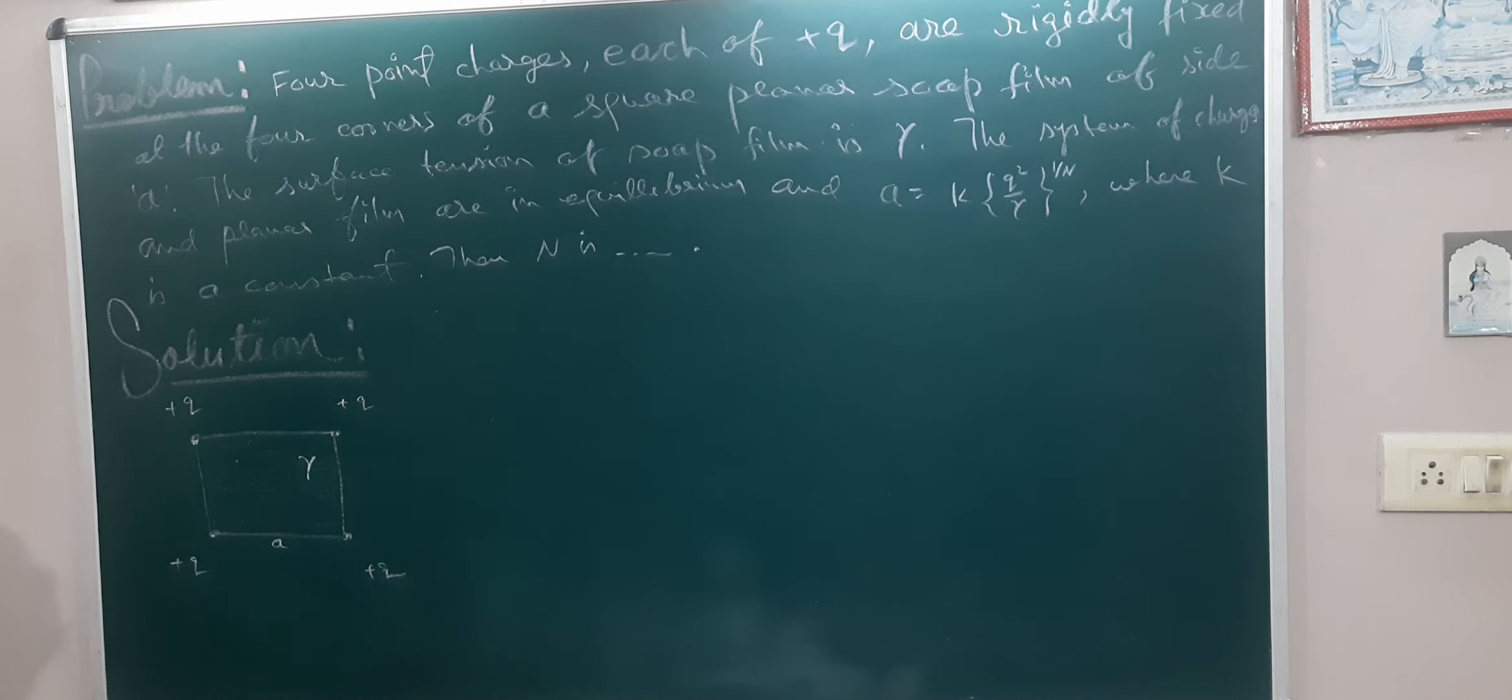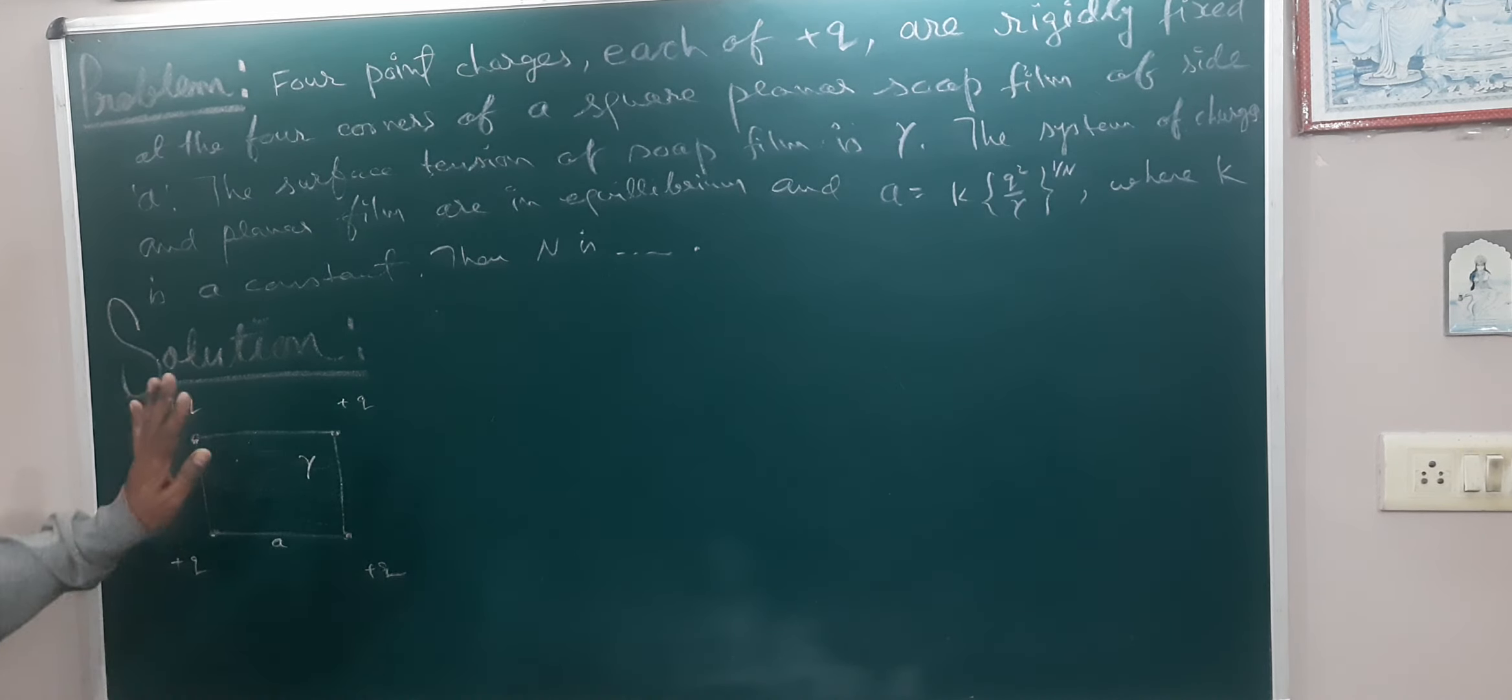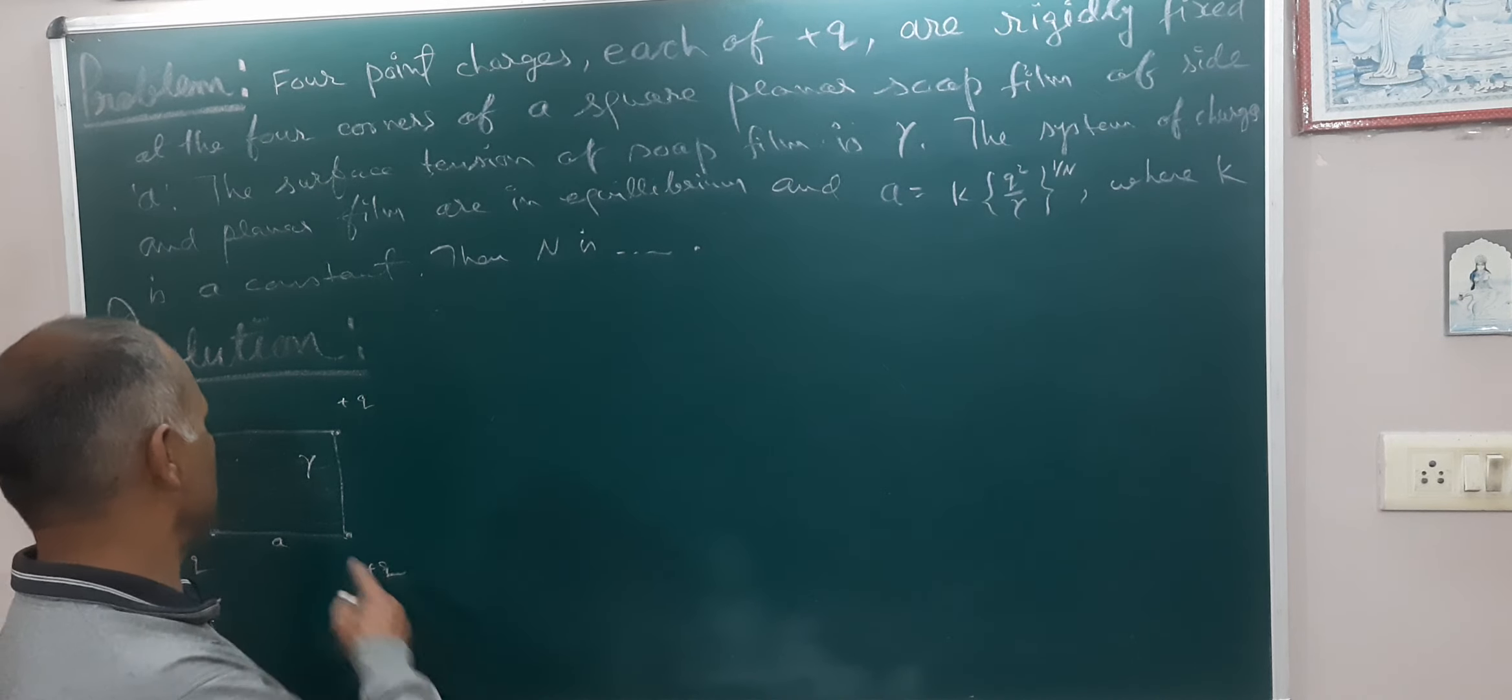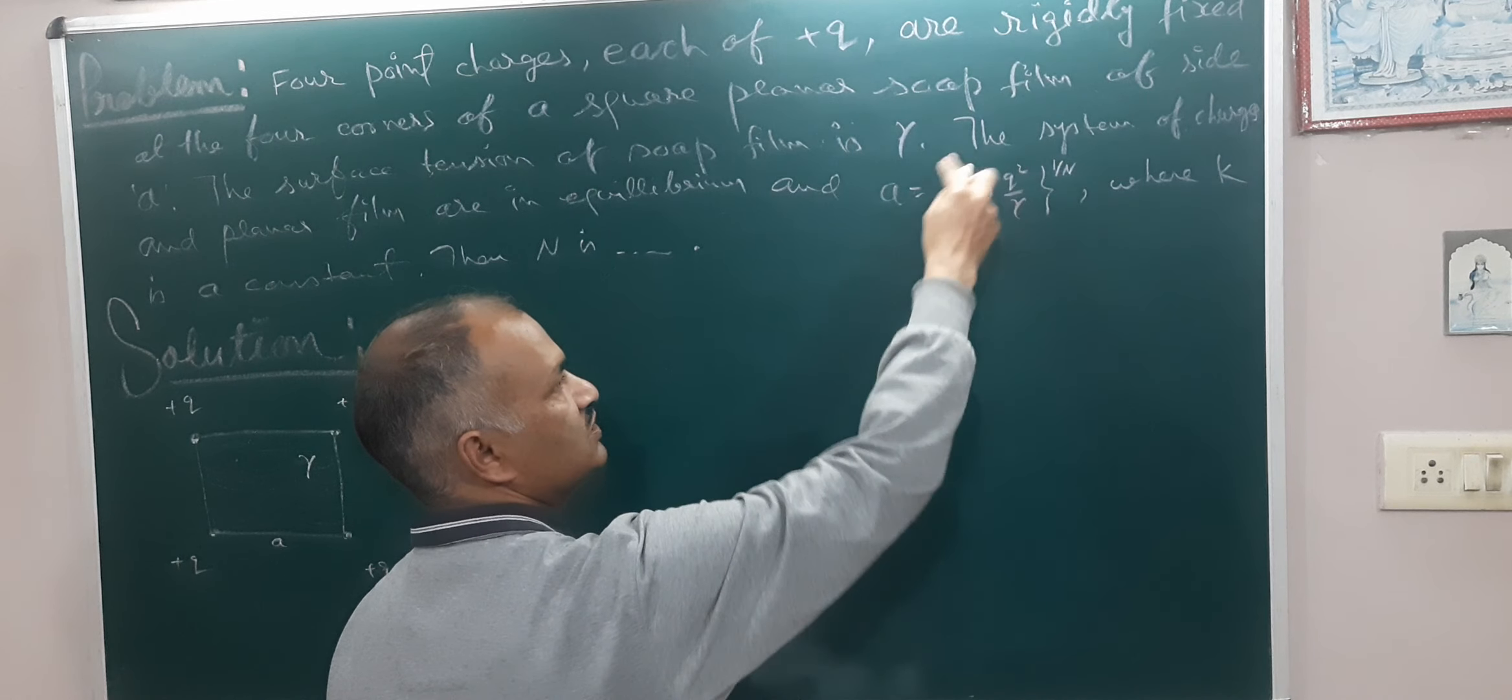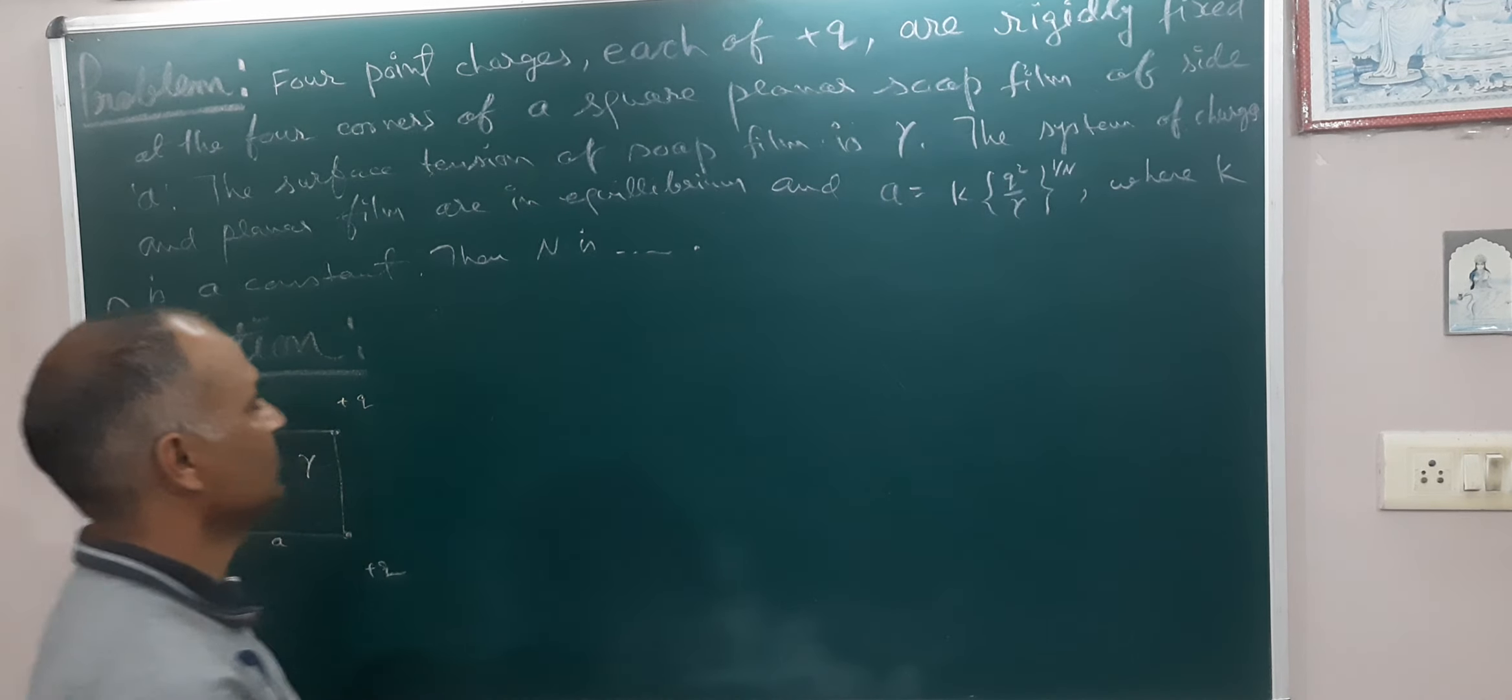The system of charges and planar film are in equilibrium so net force on system is zero. And A is this, where K is a constant, then N is in equilibrium. Let's start.